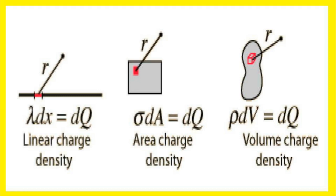The electronic charge E is equal to 1.6 into 10 to the power of minus 19 coulomb, and the charge on any body is always an integral multiple of E and can be increased or decreased in steps of E. However, the step size of E is very small because at the macroscopic level we deal with charges of a few microcoulombs. At this scale, the fact that charge can increase or decrease in units of E is not visible.